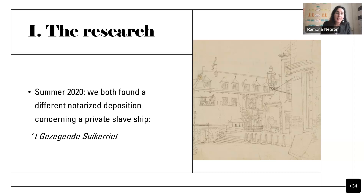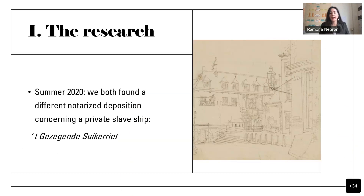We were both doing this and we each randomly came across a notarial deed — a notarized deposition — about a slave ship. The ship was called the Blessed Sugar Cane, which is a very interesting name. It was a really strange story, and we had a note of all these interesting things we came across. We put it aside and continued our work. Then a few weeks later we both spoke to each other about this slave ship, not knowing beforehand that we had each encountered these depositions.